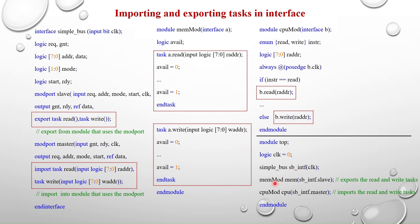The read and write tasks in memmod use the hierarchical name — 'a.read' and 'a.write' — because they are declared as export tasks. Export means the tasks are implemented in the module using the hierarchical name. The number of arguments must match. In the top module I instantiate the interface and both modules: memmod and cpumod. 'sb_intef.slave' means memmod uses the slave modport, which allows it to export the read and write tasks. 'sb_intef.master' means cpumod uses the master modport, which allows it to import and call the read and write tasks.